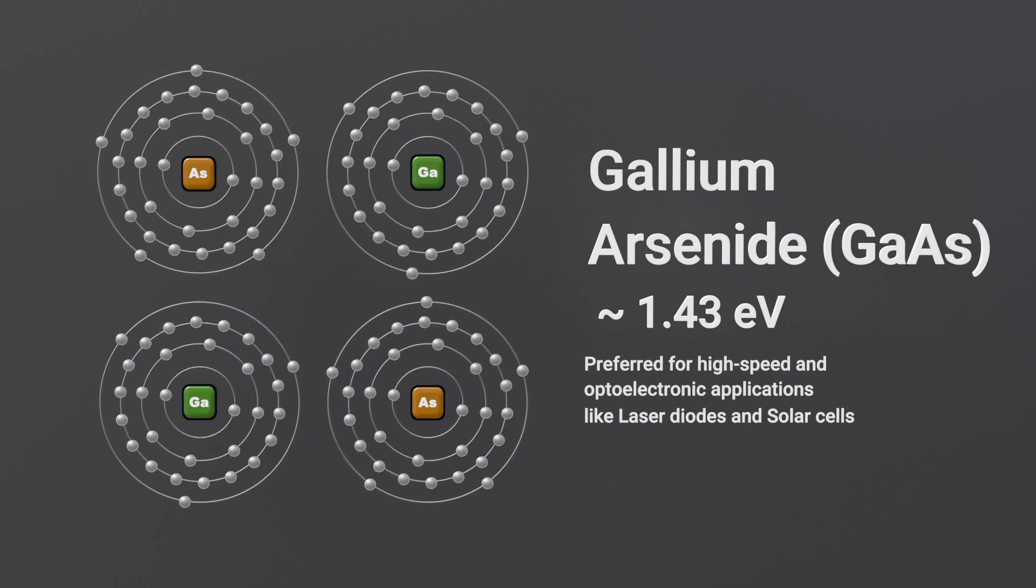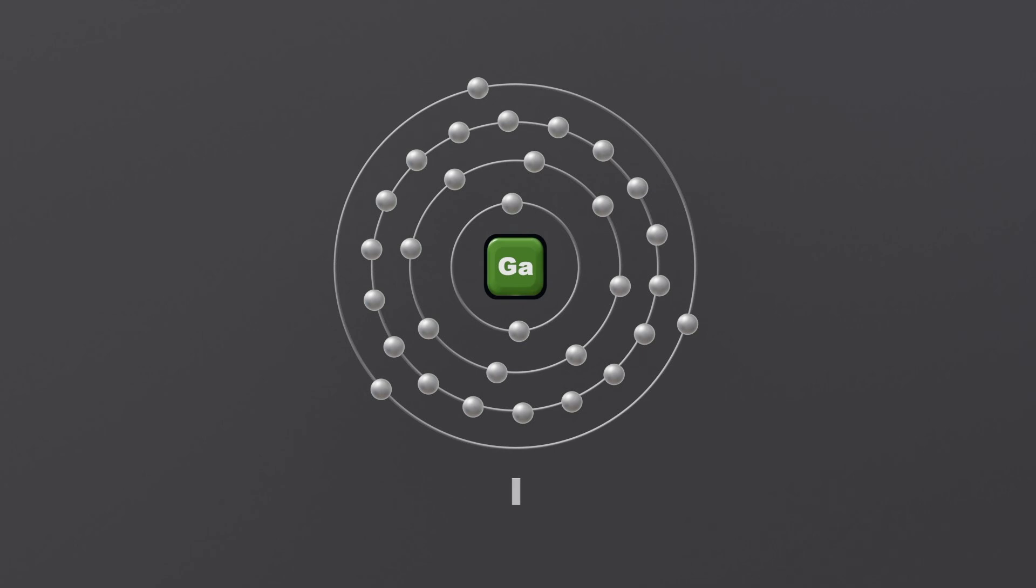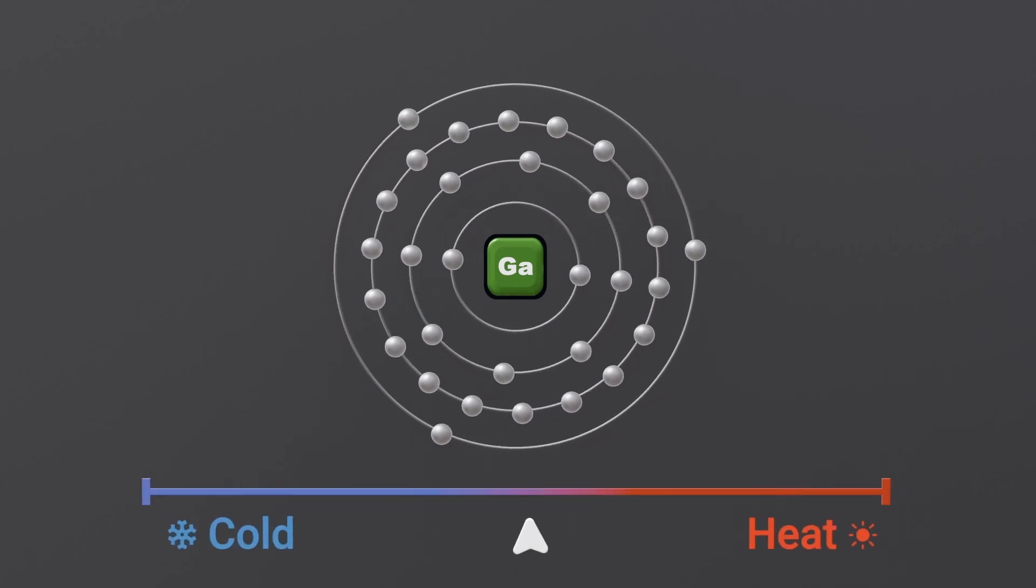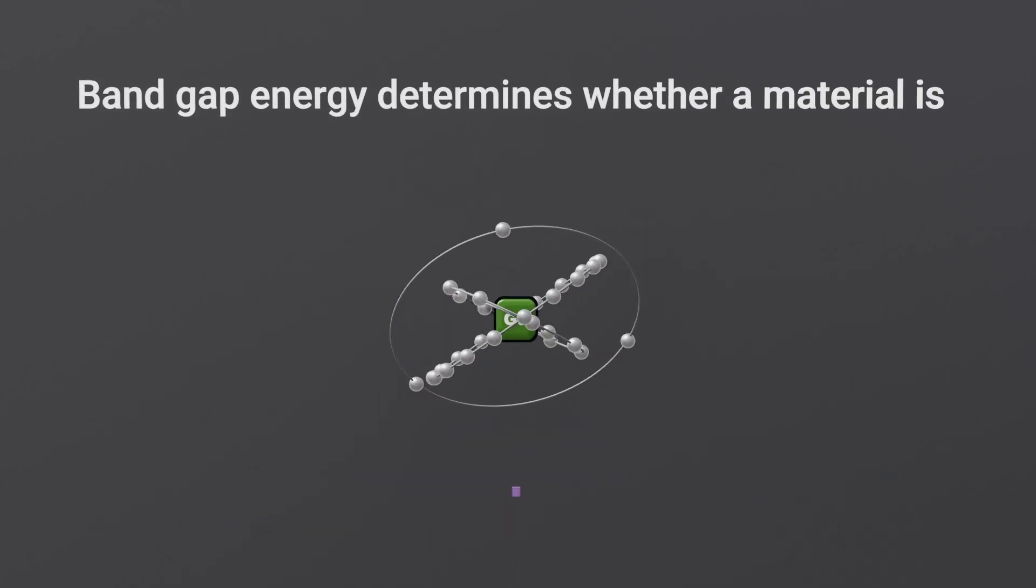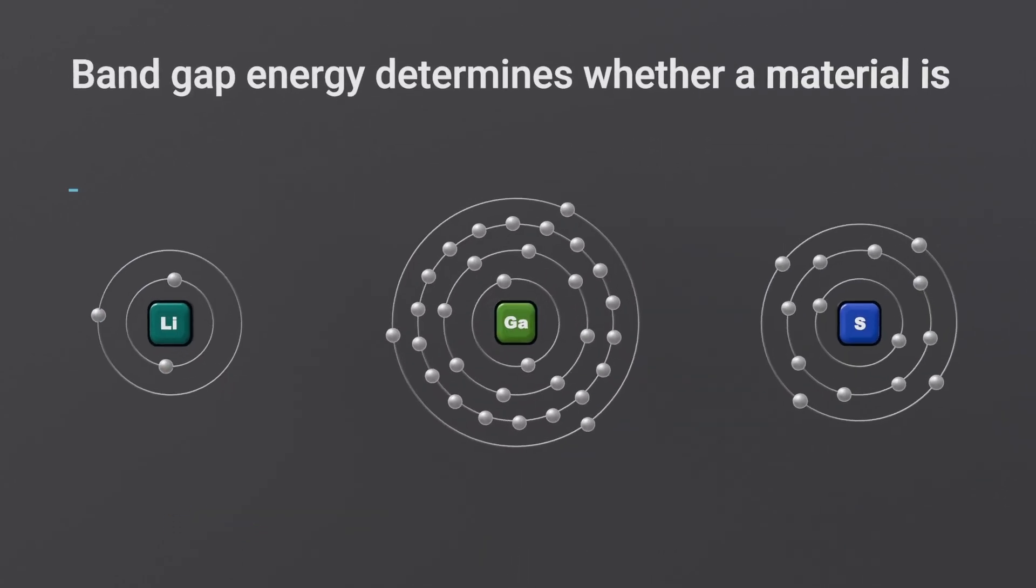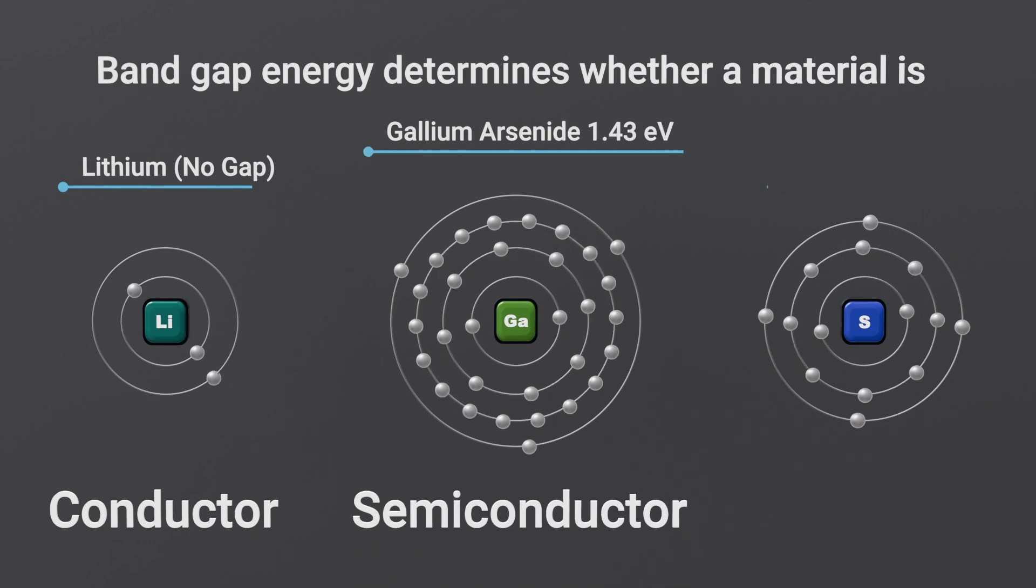This gap is small enough that electrons can be excited to move under certain conditions, allowing controlled electrical conductivity. The band gap energy determines whether a material is a conductor, semiconductor, or insulator.